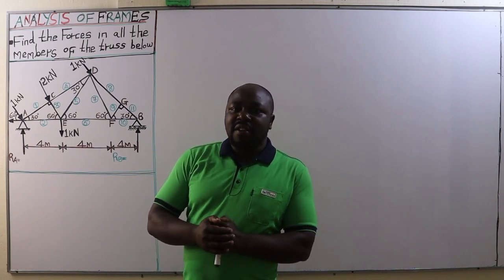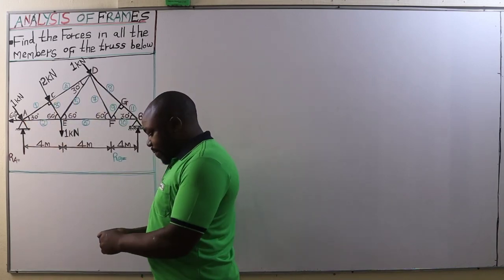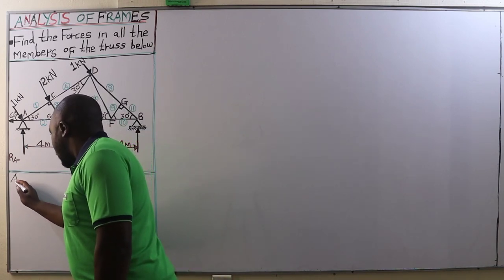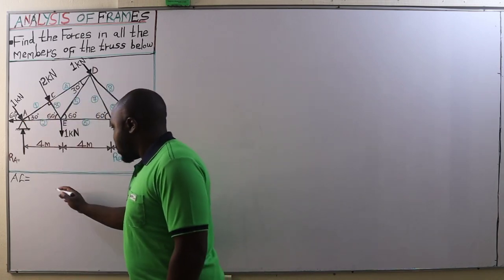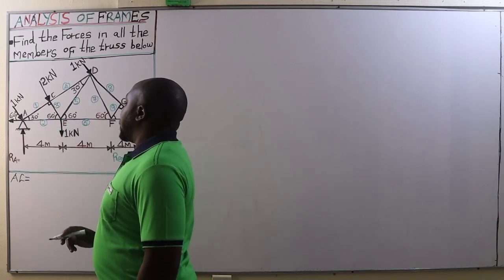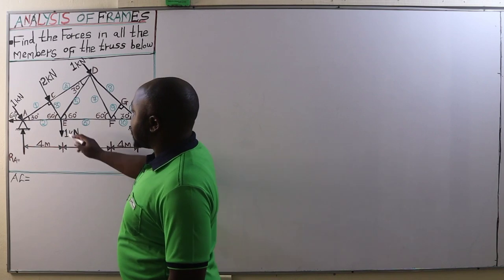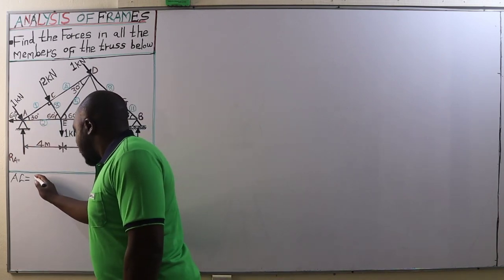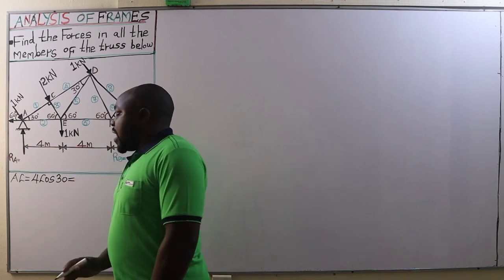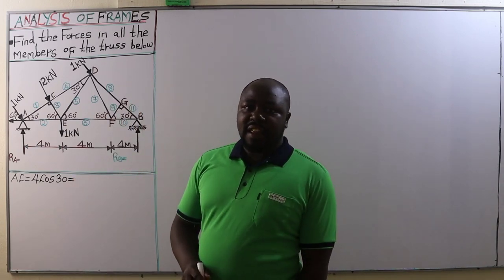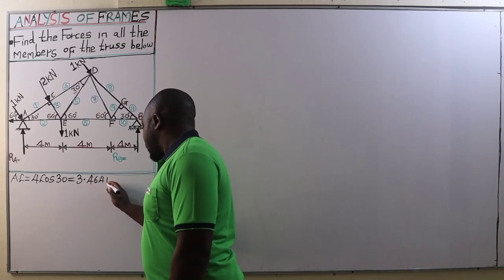We begin by determining the length of member AC. The length from A to the point of action of the 2 kN load is the hypotenuse multiplied by cos 30, which gives us the adjacent side. Therefore 4 cos 30 equals 3.464 meters.